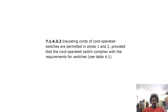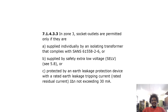In zone 3, socket outlets are permitted only if they are: (a) supplied individually by an isolating transformer that complies with SANS 61558-2-6, or (b) supplied by SELV, or (c) protected by an earth leakage protection device with a rated residual current not exceeding 30 milliamps.